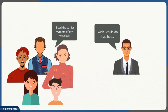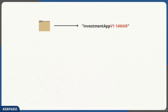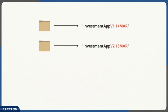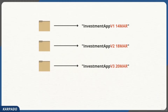Sundar came up with a solution: for the investment app project, he would create a folder called 'investment app v1 - 14th March' — the delivery date. If Bob asked for new features, instead of making changes in the existing project, Sundar would make a copy of it, name it v2, and introduce all the new features. Similarly, if more features were requested, he'd copy the latest version, name it v3, and make the necessary changes — and so on.